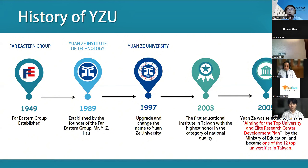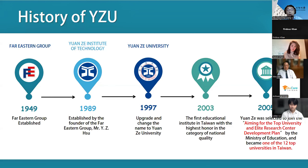We were established by the Far Eastern Group, considered one of the great commercial groups in Taiwan. Our university was established in 1989 as the Yuan Ze Institute of Technology, starting with five engineering departments: electrical engineering, computer science and engineering, mechanical engineering, chemical engineering, and industrial engineering. After 35 years, we have extended to a five-plus-one college structure with many different majors.